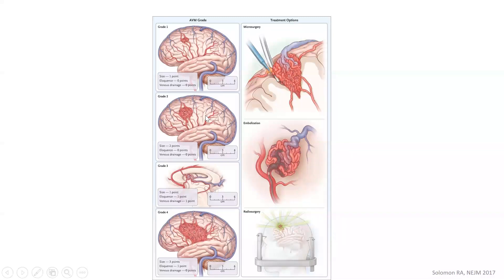When you look at an AVM, treatment options include surgery, embolization, and radiosurgery. There's actually a fourth option — do nothing, just don't touch the AVM at all — which is also an option for some patients. Everything comes based on the patient's overall health status and many other criteria.